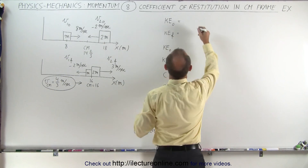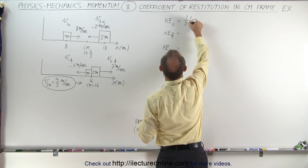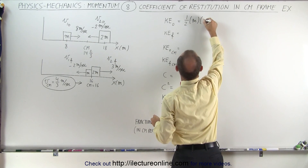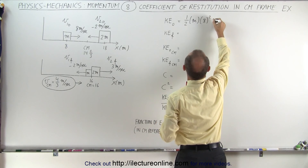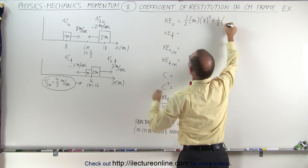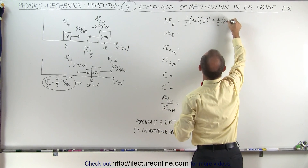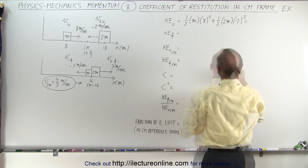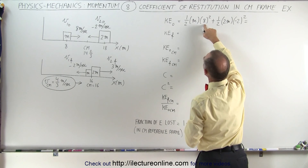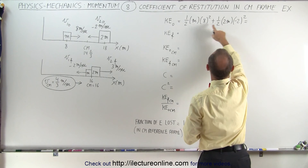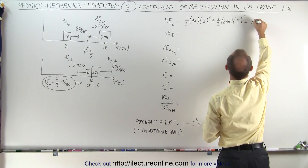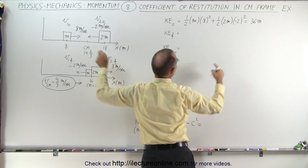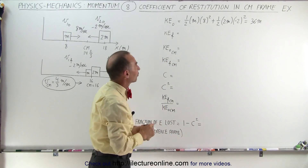Initial kinetic energy equals one-half times m times 8 squared, plus one-half times 2m times (minus 2) squared. This gives 64 over 2, which is 32, plus 4, which is 36m — where m is the mass of the smaller object.